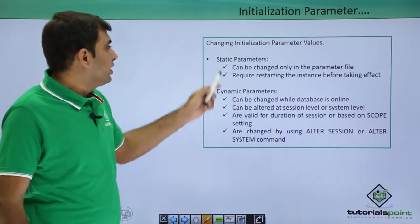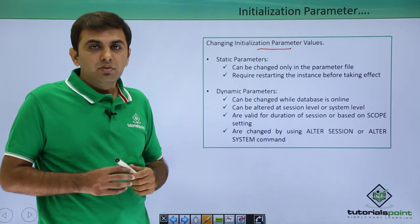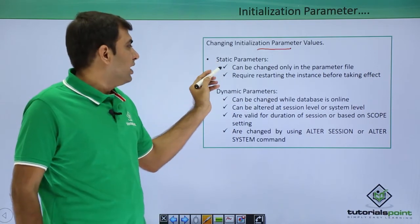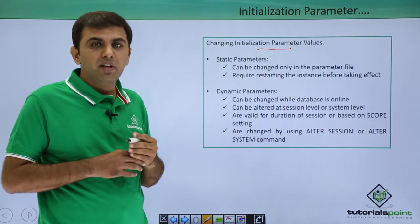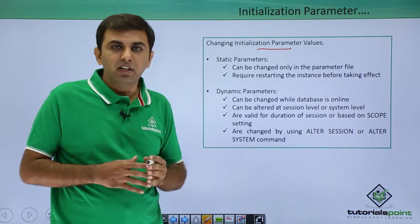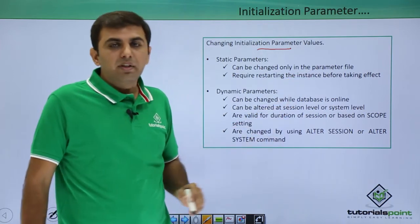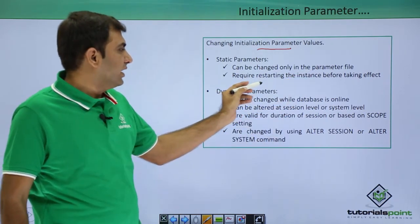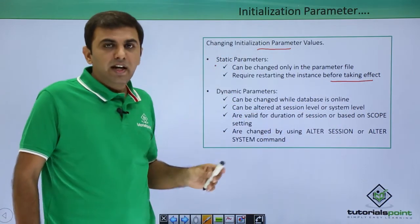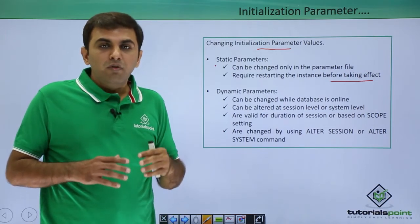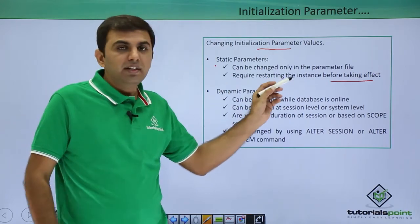Next, changing initialization parameter values. If you want to change any parameter value, there are two kinds of parameters: one is a static parameter and one is a dynamic parameter. A static parameter can only be changed in the parameter file, and it requires restarting the instance before taking effect. This is very important — if any parameter is static and you are changing its value, you need to restart the Oracle database for that change to take effect.